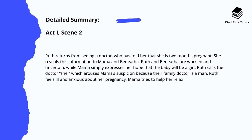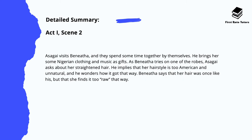Ruth returns from seeing a doctor who has told her that she's two months pregnant. She reveals this information to Mama and Benita. Ruth and Benita are worried and uncertain, while Mama simply expresses her hope that the baby will be a girl. Ruth refers to the doctor as 'she,' which arouses Mama's suspicion, because their family doctor is a man. Ruth feels ill and anxious about her pregnancy, however Mama tries to help her relax.